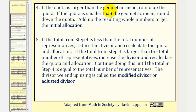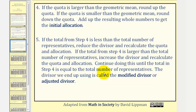Step four: if the quota is larger than the geometric mean, we round up the quota. If the quota is smaller than the geometric mean, we round down the quota. Then we add the resulting whole numbers to get the initial allocation. Step five: if the total from step four is less than the total number of representatives, we reduce the divisor and recalculate the quota and allocation. If the total is larger, we increase the divisor and recalculate. We continue until the total equals the required number of representatives — the divisor we end up with is called the modified or adjusted divisor.